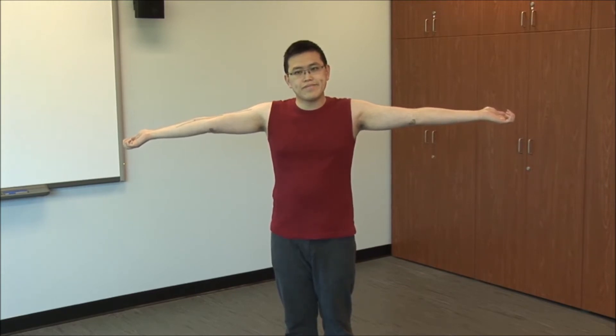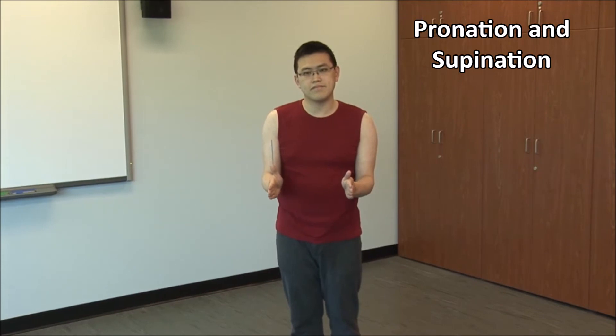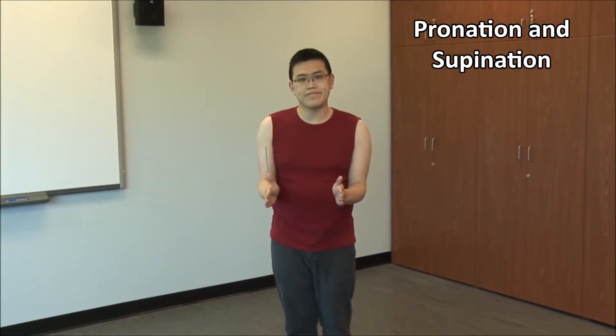Range of movement should be done actively and followed by passive assessment if limitation is detected. Assess flexion — normal is about 140 to 150 degrees. Full extension is defined as 0 degrees, not 180. Some men may lack 5 to 10 degrees of full extension. You may also see hyperextension, especially in women, up to 10 degrees. Flexion and extension occur at the humeral ulnar joint as well as the humeral radial joint. Assess pronation and supination with the elbows at the side and flexed to 90 degrees. This will avoid introducing shoulder movement, which would happen if the elbow is extended.